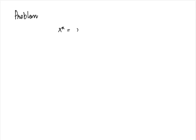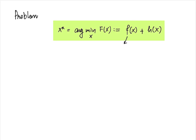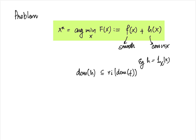We will start looking at a more general problem, also called the composite form: x* = argmin_x F(x), defined as f(x) + h(x), where f is smooth and h is convex. Further, as usual, we assume all functions are proper, closed, and the domain of h is in the relative interior of the domain of f. The composite form subsumes the constraint problems we have been looking at.